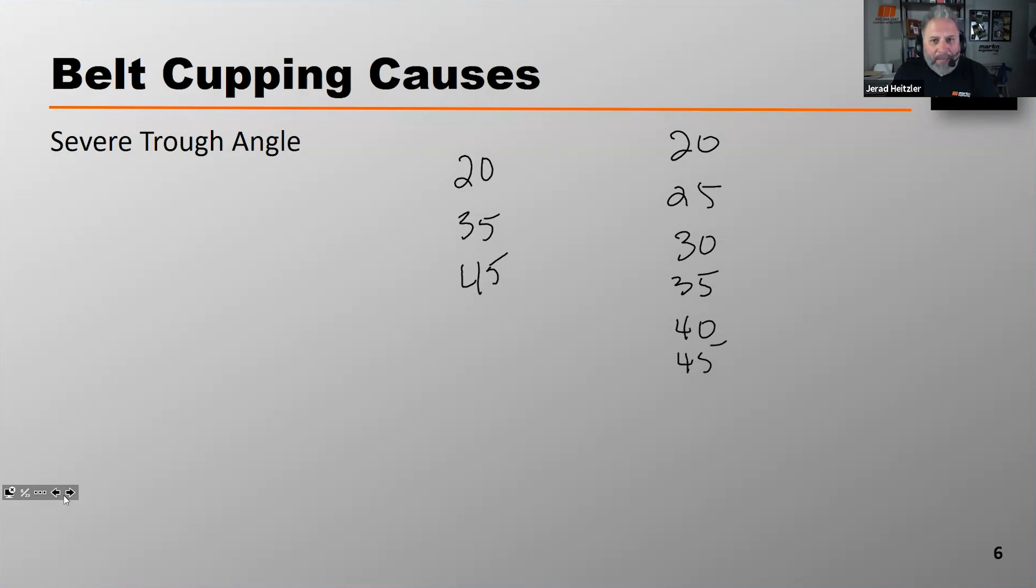So what could happen by pushing your belt into this severe trough angle if you're sourcing a belt that isn't designed to trough at 35 degrees? Let's say you're sourcing a belt that's designed to trough at 30 degrees and you put that belt or force that belt into your 35 degree idlers. You've just exceeded that belt's trough ability and that eventually will cause that belt to cup. So that's how severe trough angle can cause the belt to cup.